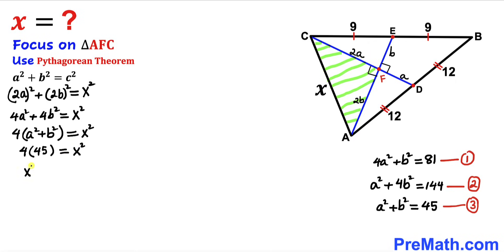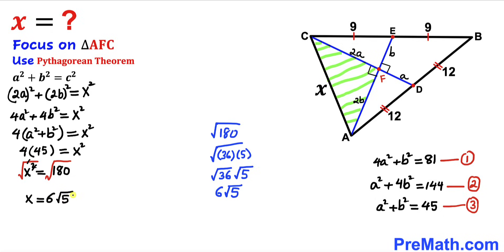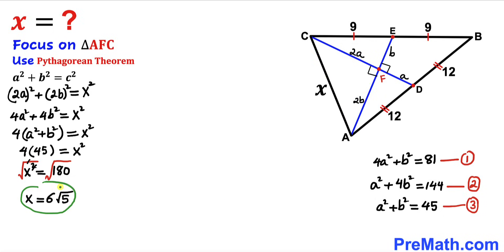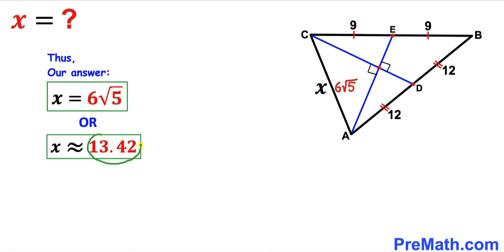Therefore x² = 180. Taking the square root of both sides, x = √180, which simplifies to 6√5. So the value of x is 6√5 units, which is approximately equal to 13.42 units. Thanks for watching and please don't forget to subscribe to my channel for more exciting videos.